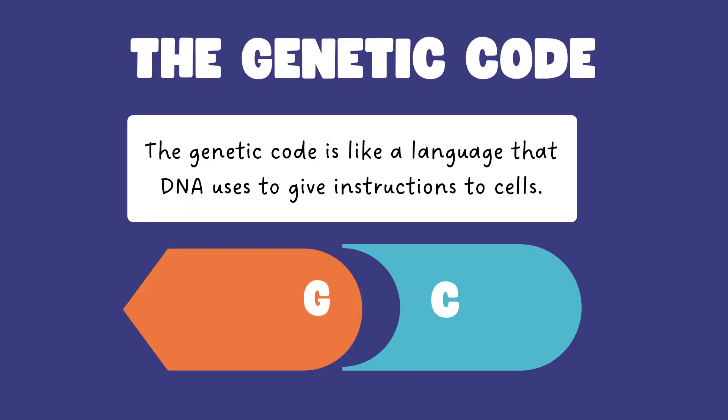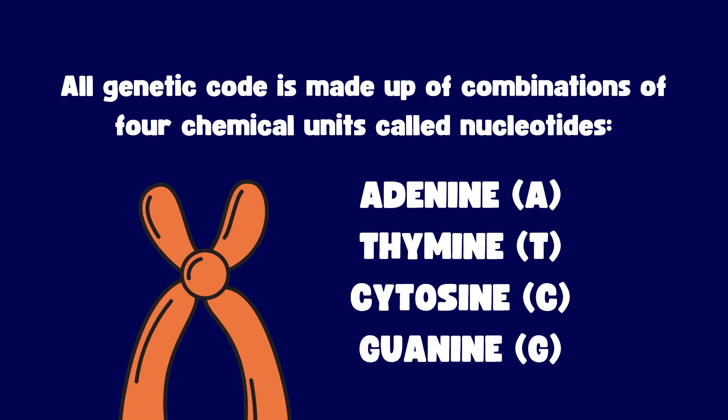The genetic code is like a language that DNA uses to give instructions to cells. All genetic code is made up of combinations of four chemical units called nucleotides: adenine (A), thymine (T), cytosine (C), and guanine (G).